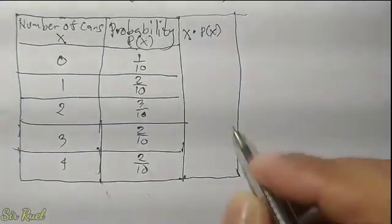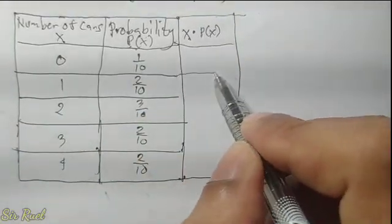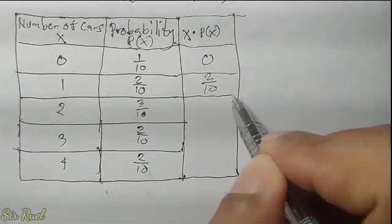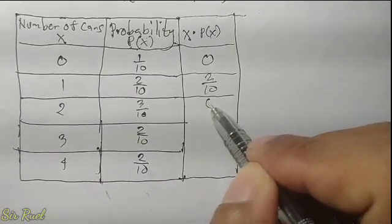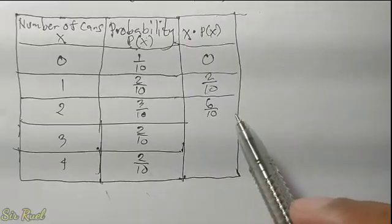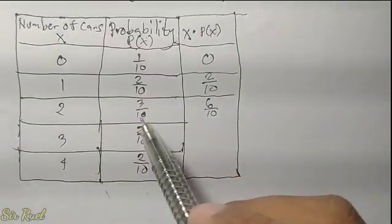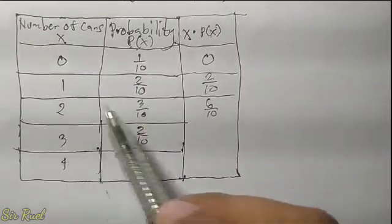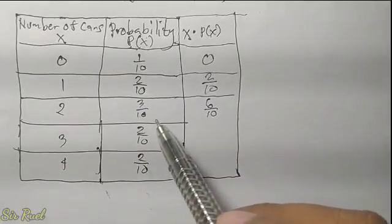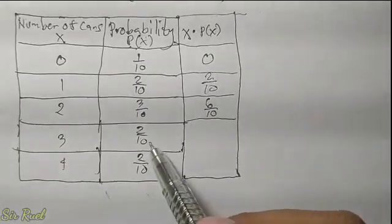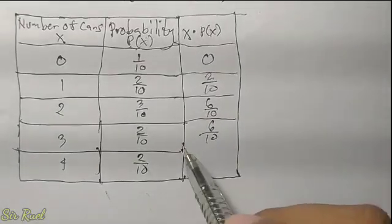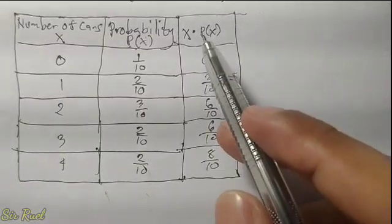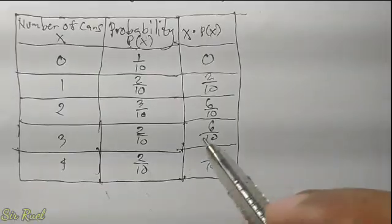Let's add another column for x times p of x. So: 0 times 1 over 10 is 0; 1 times 2 over 10 is 2 over 10; 2 times 3 over 10 is 6 over 10. Remember, we multiply the numerator by the whole number and copy the denominator. Next, 3 times 2 over 10 is 6 over 10, and 4 times 2 over 10 is 8 over 10.